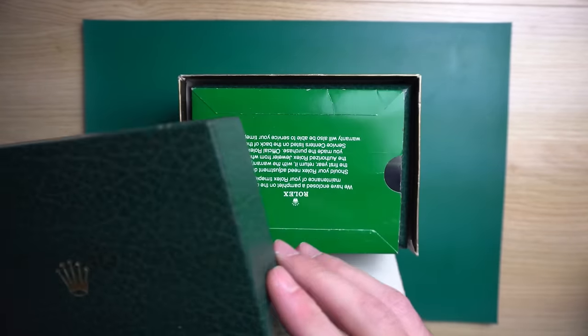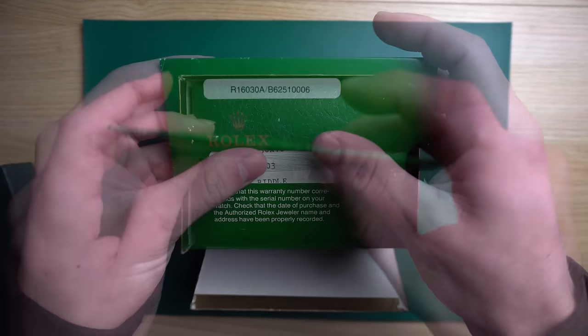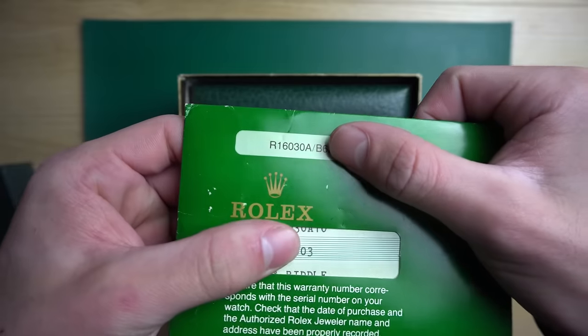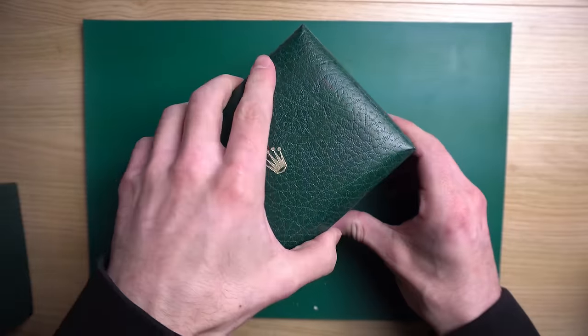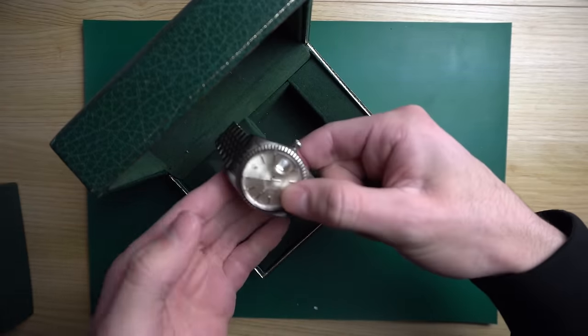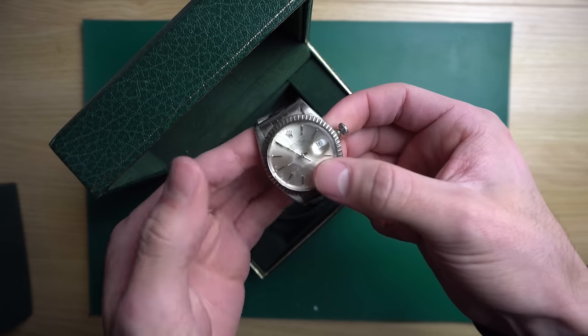All right, so before we dive into this thing, we got a nice 16-030, it's a stainless steel Datejust, and yes, I did have to get my Hep-C shot in order to do this restoration. You guys will see what I mean in a minute, this is what disease is made of. I don't know how it got this bad, but we're gonna take care of it.